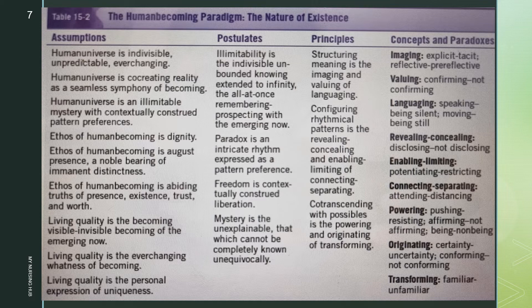The nine assumptions are: human universe is indivisible, unpredictable, ever-changing; human universe is co-creating reality as a seamless symphony of becoming; human universe is an illimitable mystery with contextually constructed pattern preferences; ethos of human becoming is dignity; ethos of human becoming is august presence, a noble bearing of imminent distinctness; ethos of human becoming is abiding truths of presence, existence, trust, and worth; living quality is the becoming visible-invisible becoming of the emerging now; living quality is the ever-changing whatness of becoming; and living quality is the personal expression of uniqueness.